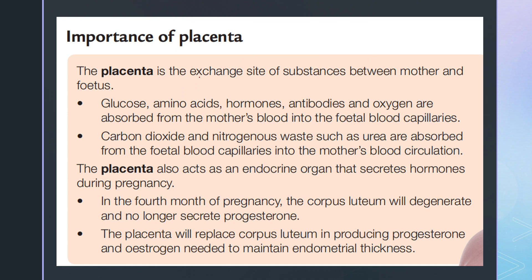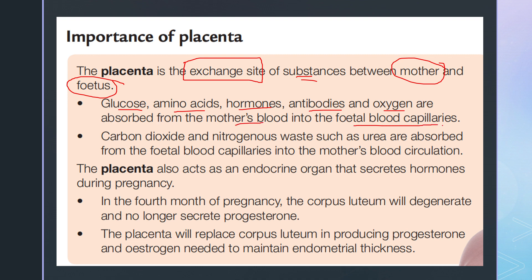Let's look at the importance of the placenta. It is the exchange site of substances between the mother and the fetus. Essential substances such as glucose, amino acids, nutrients, hormones, antibodies, and oxygen are absorbed from the mother's blood into the fetal blood capillaries. Whereas unwanted substances — carbon dioxide and nitrogenous waste such as urea — are absorbed from the fetal blood capillaries into the mother's blood circulation. So placenta is an exchange site.